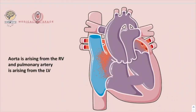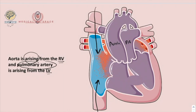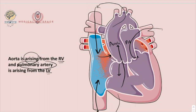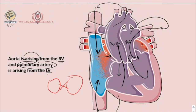In Transposition of Great Arteries, the aorta rises from the right ventricle and the pulmonary artery rises from the left ventricle. Blood from the body enters the right atrium via the inferior and superior vena cava, goes to the right ventricle, then to the aorta, and returns to the right atrium again. Blood from the pulmonary vessels goes to the left atrium, then the left ventricle, then to the pulmonary artery, and back to the lungs. This creates two separate circulations, which is not compatible with life.